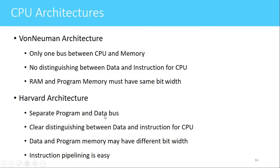In case of Harvard architecture, program memory and data memory are separate — separate buses are used for accessing program memory and data memory. There is a clear distinction between data and instructions. Using one bus, instructions are fetched, and using another bus, data is fetched by the CPU. Data and program memory can have different bit widths. Since the buses are separate, in a single clock cycle an instruction can be fetched as well as data can be fetched, enabling pipelining, which allows instructions to be executed in a staggered manner and improves the throughput of the entire system.